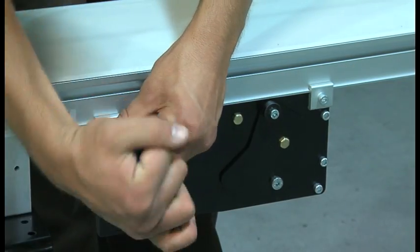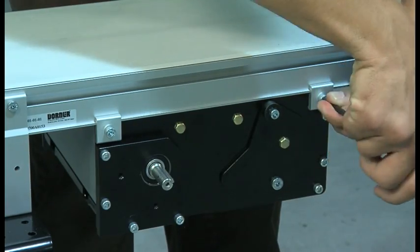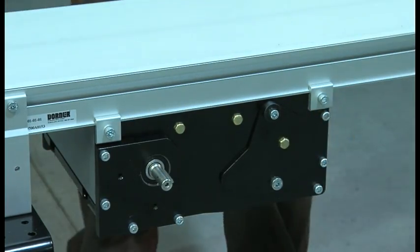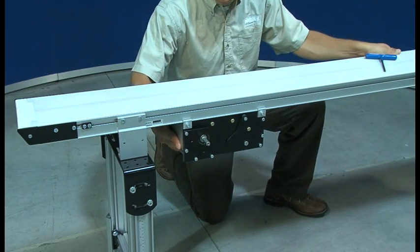The center drive module can be relocated if needed. To do that slightly loosen the mounting clip screws just enough to allow you to slide the center drive module along the bottom of the conveyor frame.